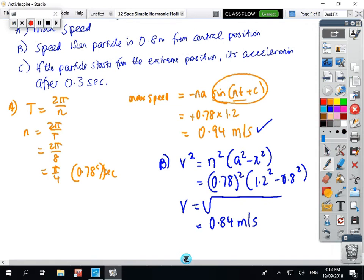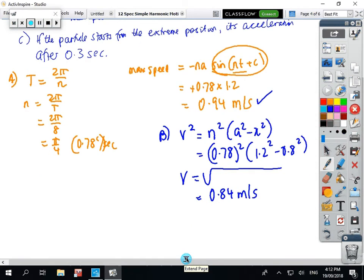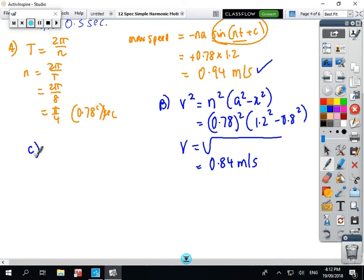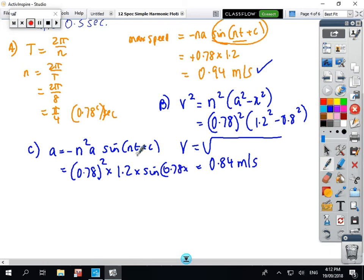And the last part of the question: the acceleration. We've got acceleration equals -N² A sin(Nt + C). So we've got 0.78 squared times 1.2 times sin of 0.78, and the time was 3. Assume C is equal to 0. Put that in the calculator, making sure that you're in radian mode. You get 0.72 meters per second squared.